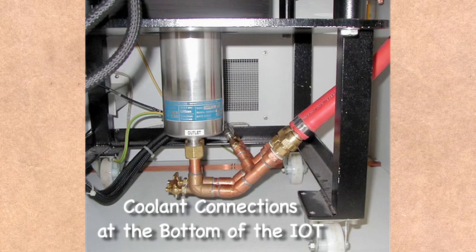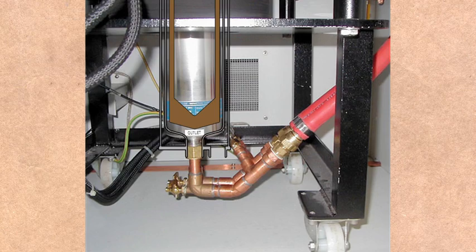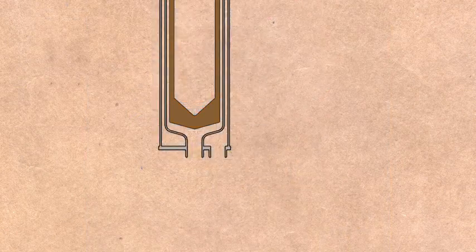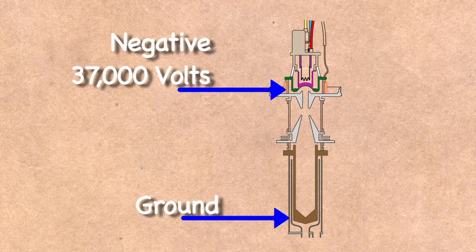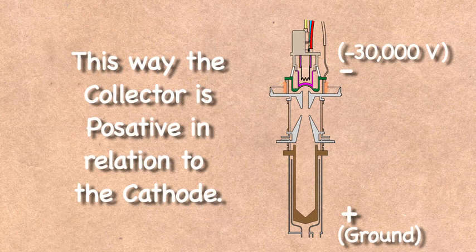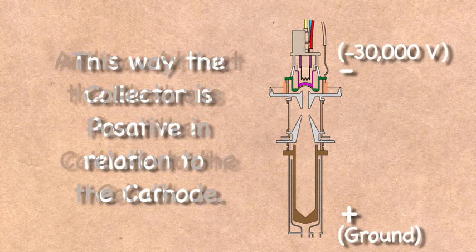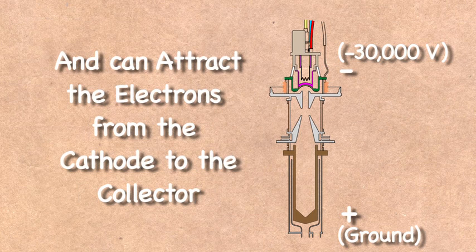Because the collector is in contact with a flowing coolant, it needs to be at ground potential. In order to make the collector/plate positive relative to the cathode, the high voltage negative lead is attached to the cathode where it sits at a negative 30,000 volts, while the collector remains at ground potential.